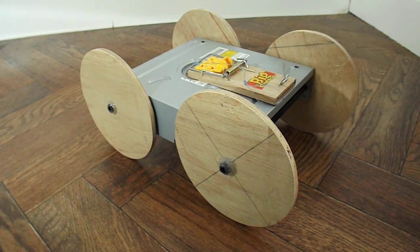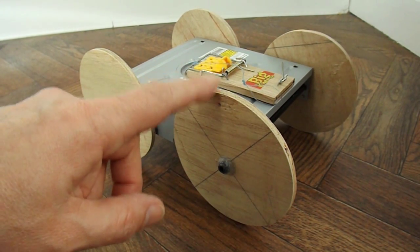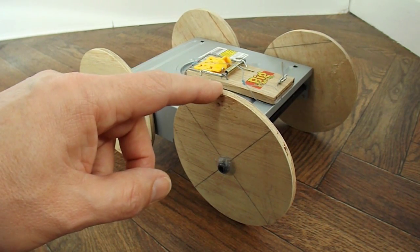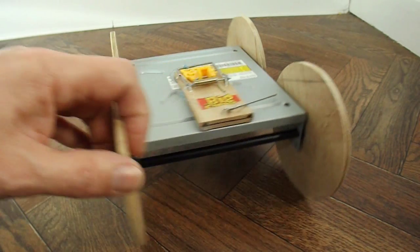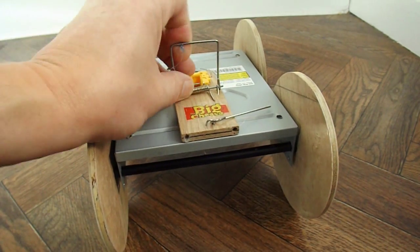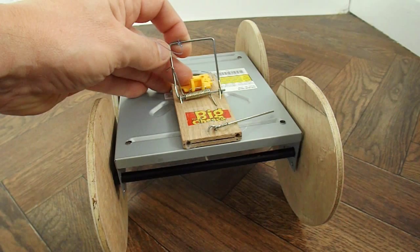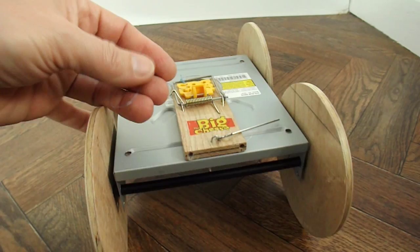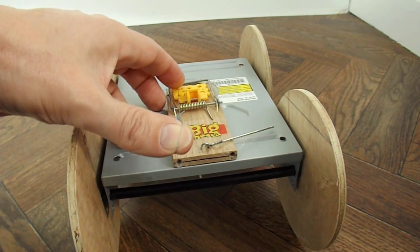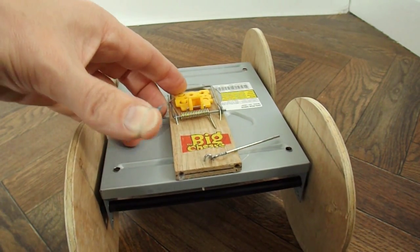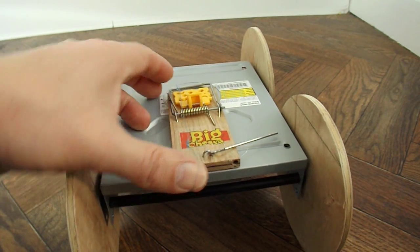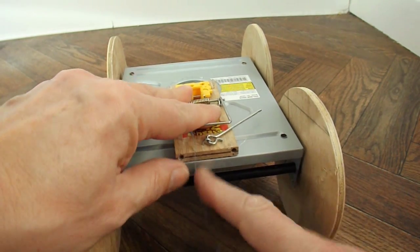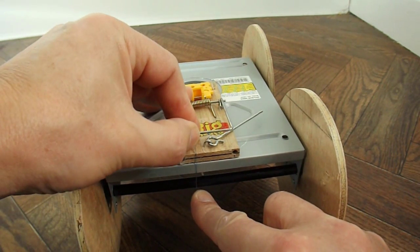If I wanted to improve this mousetrap car, I'd definitely change these wooden wheels back to normal CDs. Because these are a bit heavy. And I might put a longer lever arm on here to give us a little bit more distance. Because that is the total length of the fishing line. And in fact only about half of that actually goes round the back axle. Because you've still got quite a length there that's not being used.